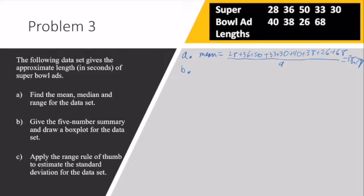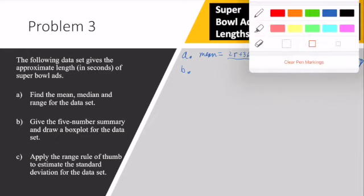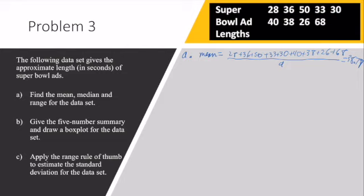I also want to find my median. Now remember, my median is the middle value. So in order to find the middle value, I need to write these in order from smallest to largest. So I have 26, 28, 30, 33, 36, 38, 40, 50, 68. I got all my values accounted for. So I have to pick my middle value. Since this is an odd number data set, the fifth piece of data is the middle. This is the piece of data that divides my data set in half. It's also called Q2. So my median is 36.